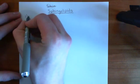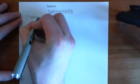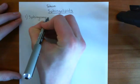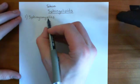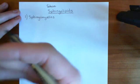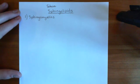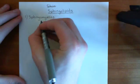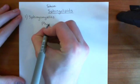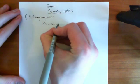The first class of sphingolipids are going to be called sphingomyelins. These are going to be considered phospholipids, because they are going to have phosphate groups within the structures that you add on to the alcohol group of that first carbon of the ceramide molecule. For instance, you can add on a phosphocholine molecule, and then you will be considered a sphingomyelin.